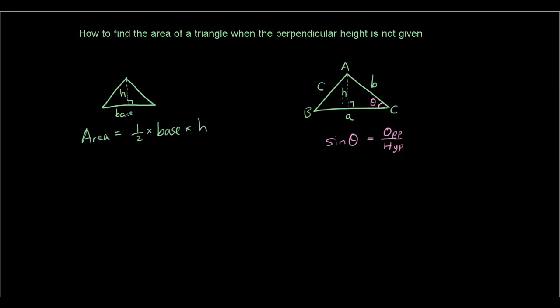And therefore, this side h will be opposite, and b would be hypotenuse. So I have sine c equals h over b. And I'm going to rewrite h as the subject, so h equals sine c times b.